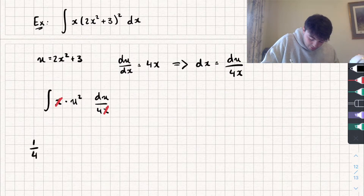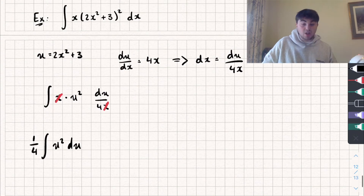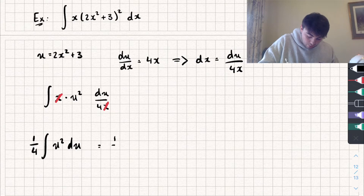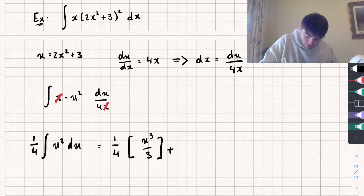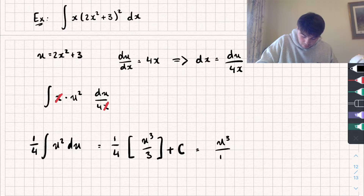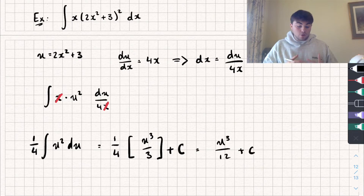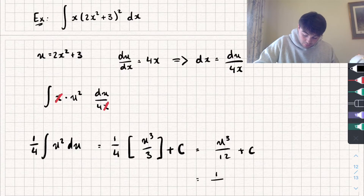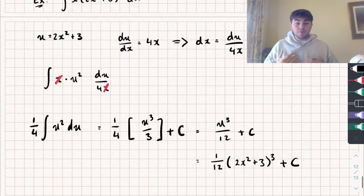Factoring out the one-quarter, we get (1/4) multiplied by the integral of u² with respect to u. Adding one to the power and dividing by the new power gives (1/4) × (u³/3) + c, which simplifies to u³/12 + c. Substituting u = 2x² + 3 back in, our answer is (1/12)(2x² + 3)³ + c.